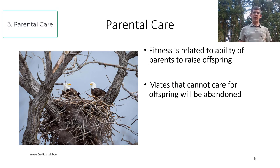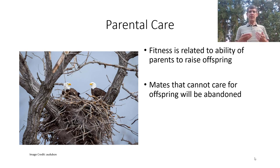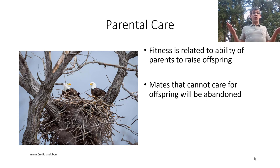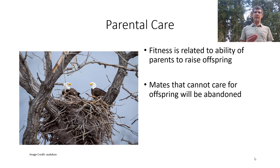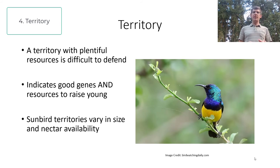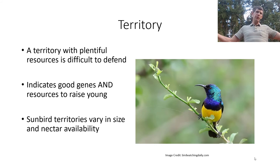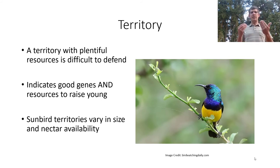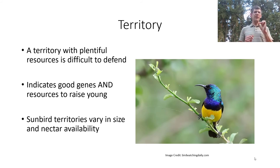Parental care is another means of assessment. With bald eagles, if the male does not take good care of the young, the female will leave him — one documented case showed a female abandoning a male after chicks were eaten by ravens two years in a row due to poor paternal care. Territory also matters: a sunbird able to defend a territory with plentiful resources — whether a large territory with many good flowers or a small one with excellent flowers — signals good genes and a good environment for raising young.